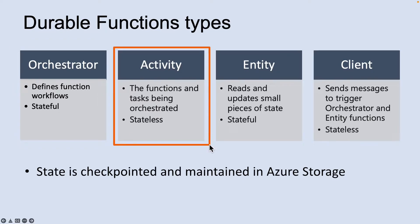Activity functions are the functions and tasks that are orchestrated in the process. For example, you might create an Orchestrator function to process an order. The tasks involve checking the inventory, charging the customer, and creating a shipment. Each task would be a separate Activity function, and these activities can be executed serially, in parallel, or some combination of both.